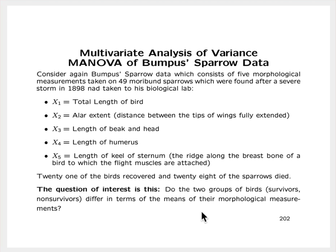The question of interest is this: do these two groups of birds, the survivors and the non-survivors, differ with respect to the means of their morphological measurements? In other words, do the means of any of these five variables differ across these two groups of sparrows?